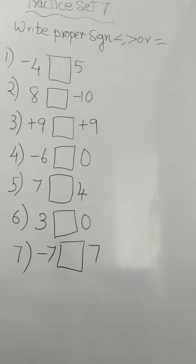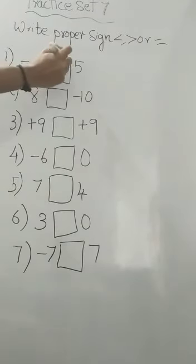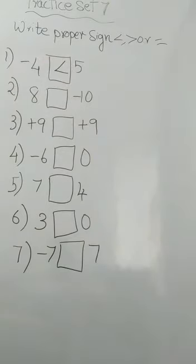Now, related to comparing integers, we have practice set 7. You have to write proper signs: less than, greater than or equal to. We have to use those signs. The first question is minus 4 and 5. One is negative and one is positive. Always positive numbers are greater than negative, so 5 is greater.